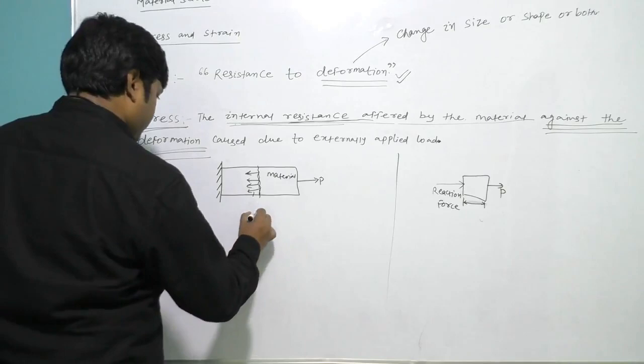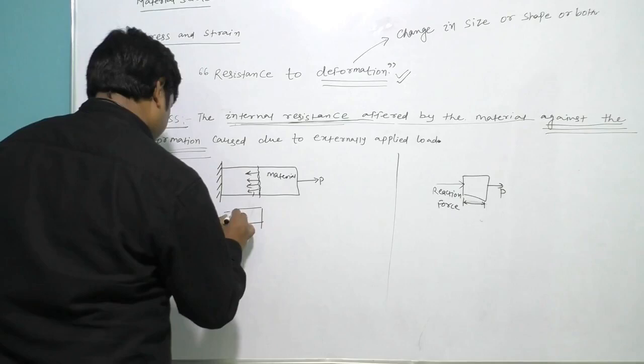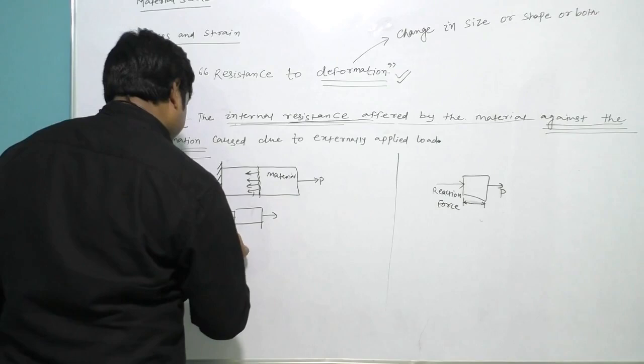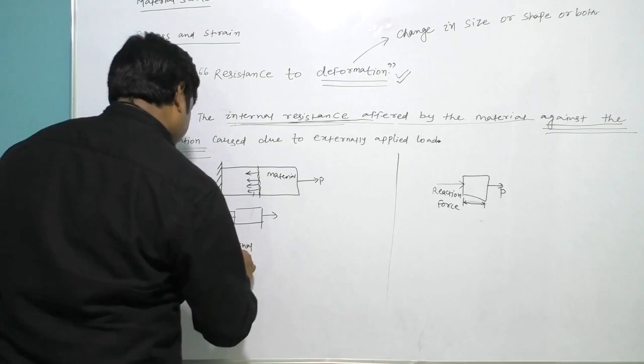So let me draw the free body diagram. This represents the internal resistance of the material against deformation, with the load P applied.